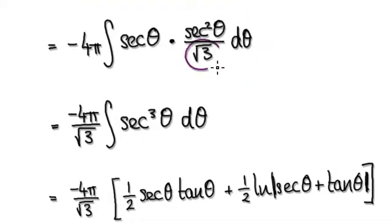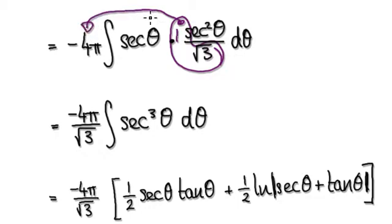Now tidy this up. This is a constant, -4π/√3, just a fraction. Take that constant out, which then gives you this.